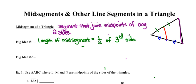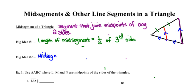If you're not particularly fond of fractions, another way of saying that is that the length of the third side is double the length of the mid-segment. The second big idea you need to be aware of regarding the mid-segment is that not only is its length half that of the third side, but it's also parallel to the third side. So in the diagram, the red segment and the purple segment are going to be parallel to each other.